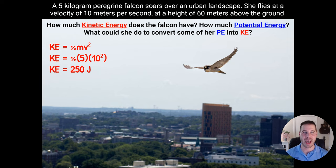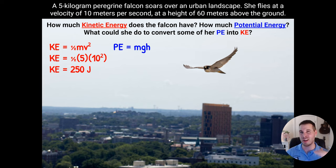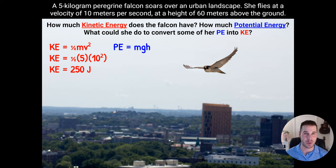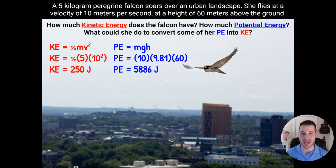Now for the potential energy. Potential energy equals mass times gravity times height. The mass is still 5 kilograms. Although the falcon isn't right on Earth's surface, it's close enough that we use gravity as 9.81. The height is 60 meters above the ground. So potential energy equals 5 times 9.81 times 60, which comes out to 5,886 joules of potential energy.